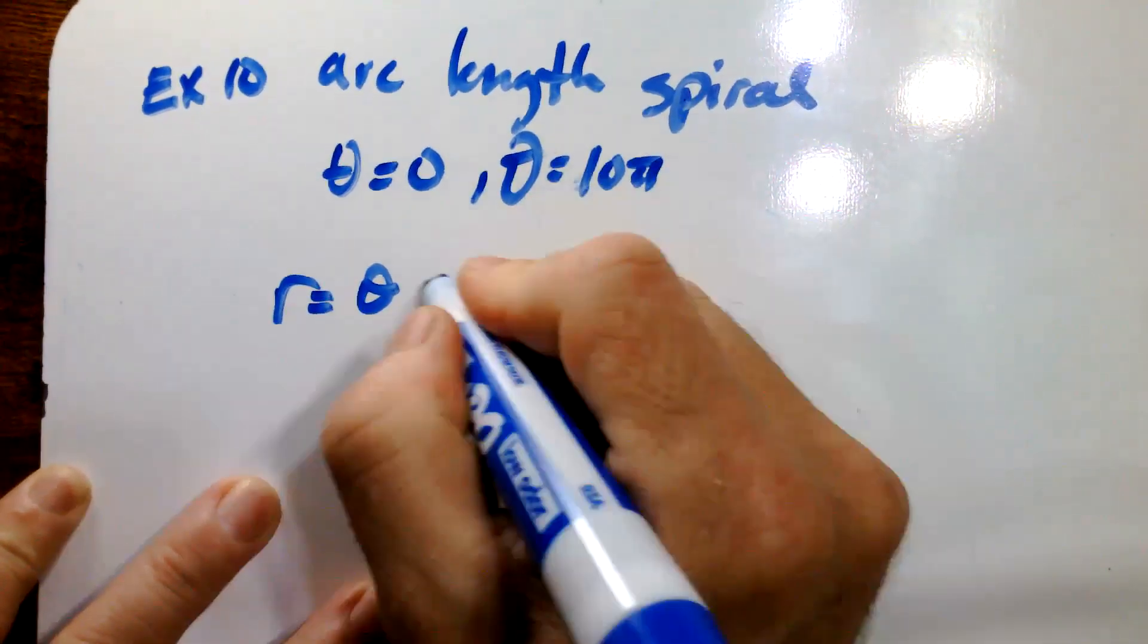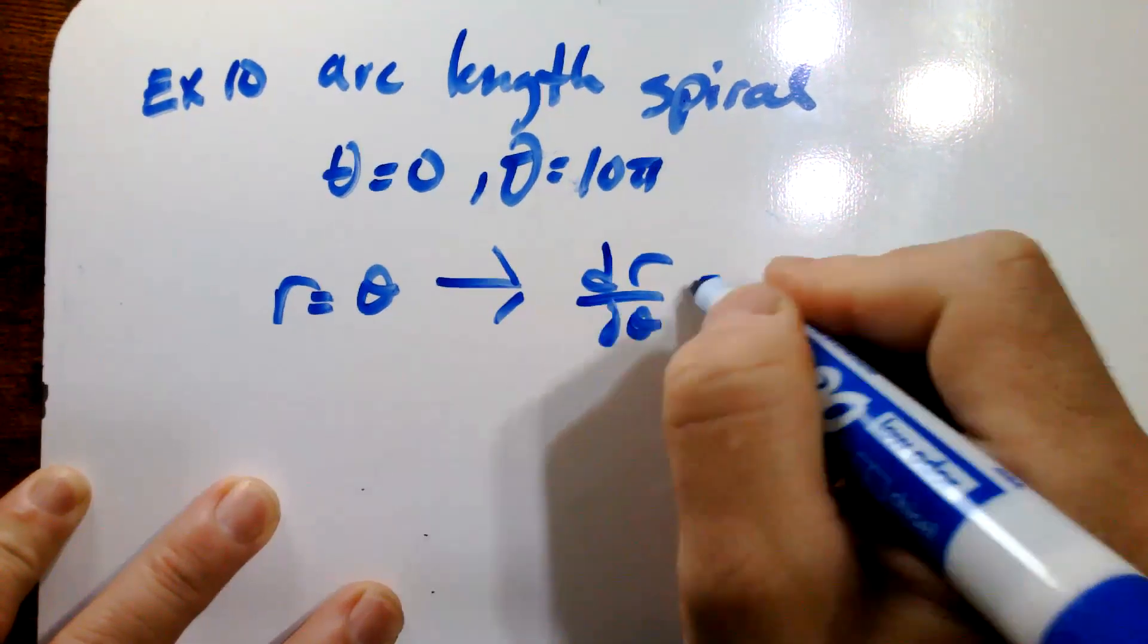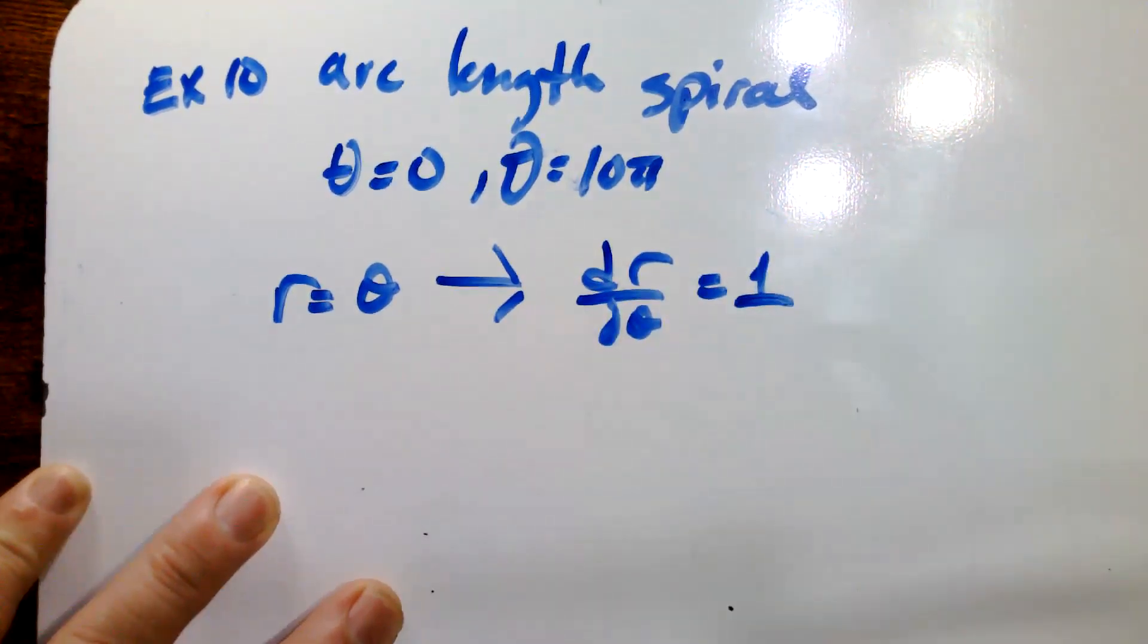So that means then that dr/dθ is conveniently equal to one.